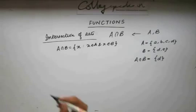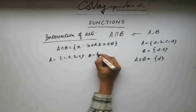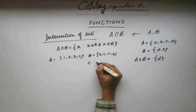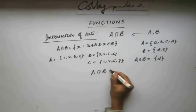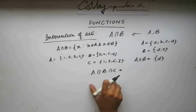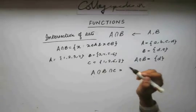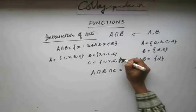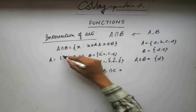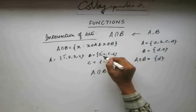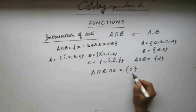Taking the earlier example where A = {1, 2, 3, 4}, B = {2, 4, 5, 6}, and C = {1, 2, 6, 8}, what is A intersection B intersection C? We need elements common to all three sets. 3 is not in B or C; 6 is not in A; 1 is not in B. Only 2 is present in all three sets. So A intersection B intersection C = {2}.